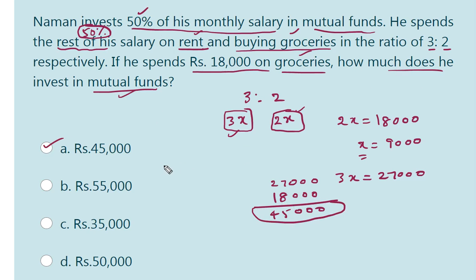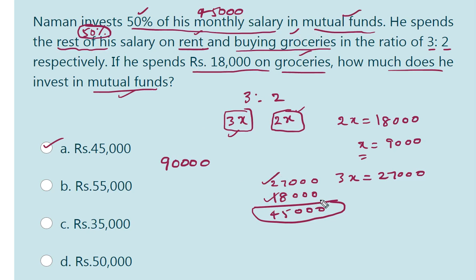So he invests 45,000 in mutual funds. What is his total salary? Total salary is 90,000. Let us verify: 50% of monthly salary is 45,000 invested in mutual funds, and in the other 45,000 — 27,000 is rent and 18,000 is for purchasing groceries.